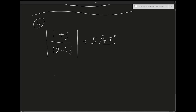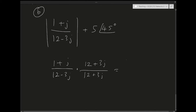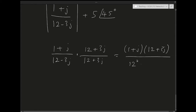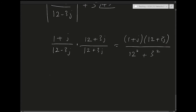Let's start with (1 + j)/(12 − 3j). The easiest way to divide is to multiply by the complex conjugate: multiply numerator and denominator by (12 + 3j)/(12 + 3j). This doesn't change anything — it's multiplying by 1. The denominator becomes 12² + 3², since j·(−j) = 1 and the imaginary cross-terms cancel.